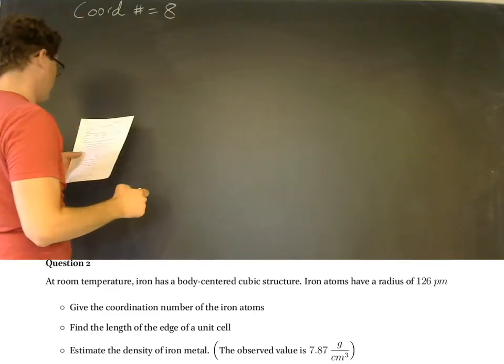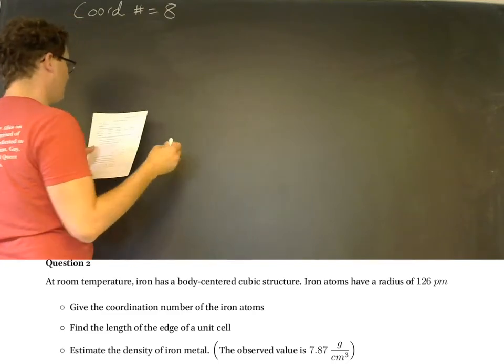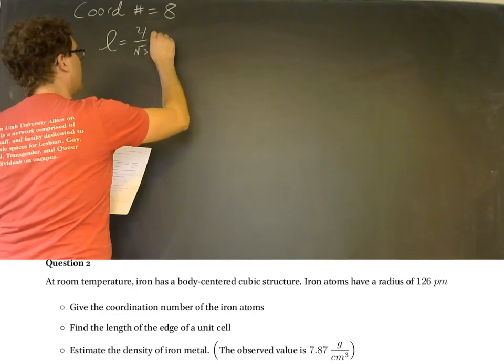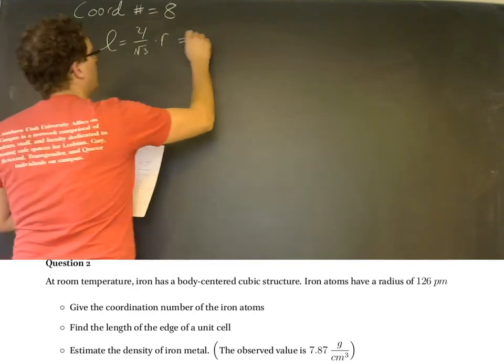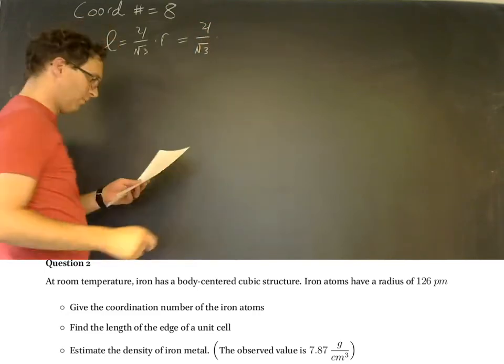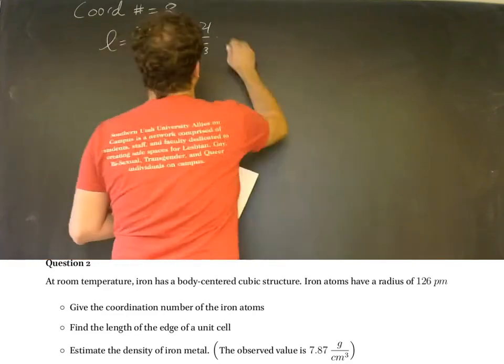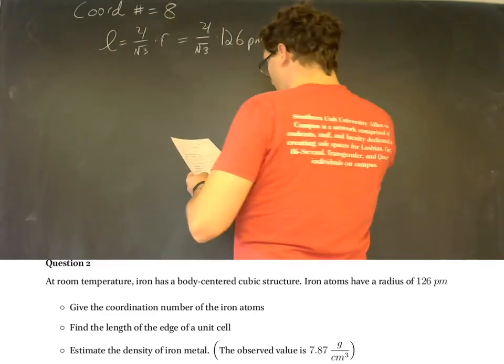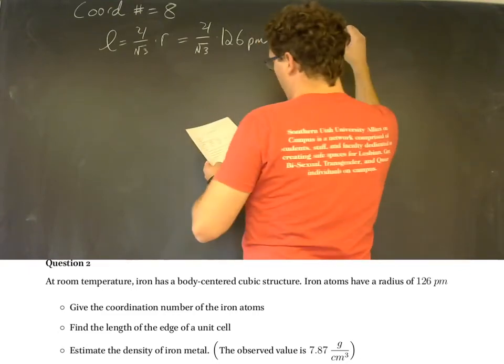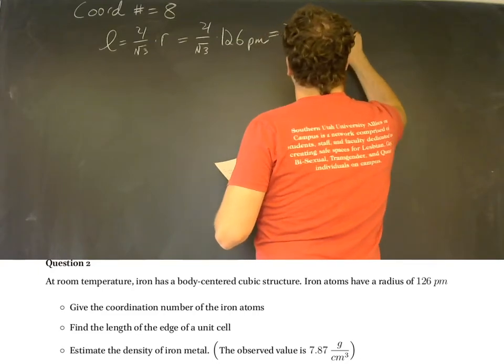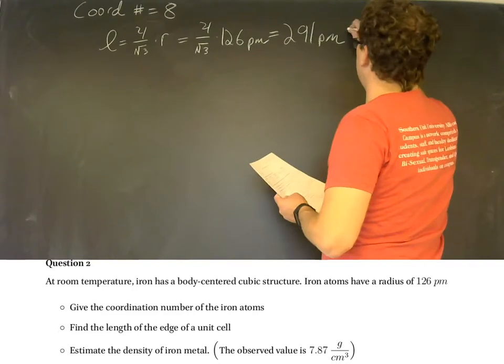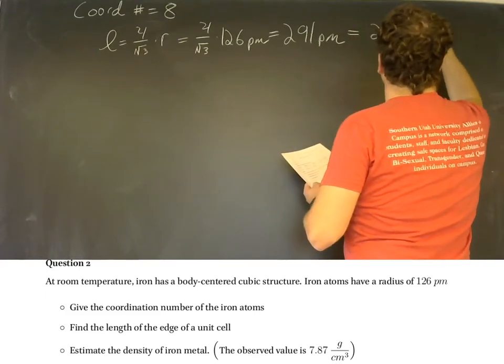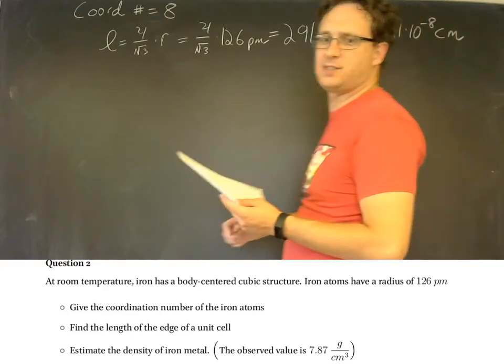And then we're supposed to find the length of an edge of a unit cell. For body centered cubic, L is equal to four over square root of three times R. And so the four over square root of three will be multiplied by the 126 picometers, 126 picometers that is given as the atomic radius of iron. And this is going to give a unit cell edge length of 291 picometers. Now to make the next step a little bit easier we can convert this into centimeters. That would be 2.91 times 10 to the negative 8 centimeters. And that's just to help us with the next step.